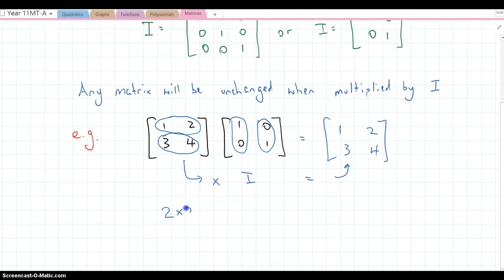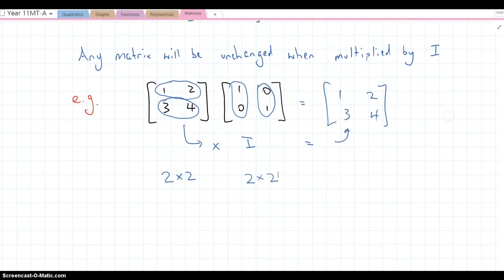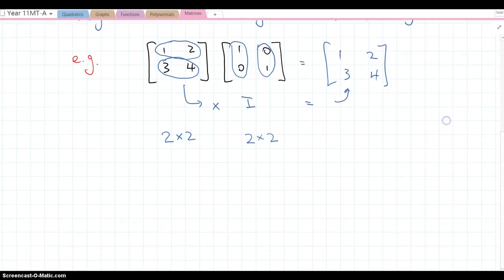Now that was a 2 by 2. This was a 2 by 2 identity. Now identity matrices have to be square, so we're only going to be multiplying by another square matrix in this case in order for us to be looking at that property where it's unchanged, the 1 matrix, the identity matrix.